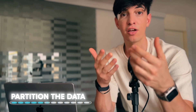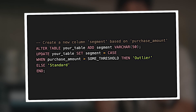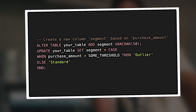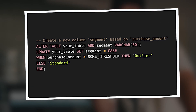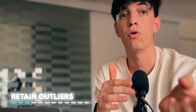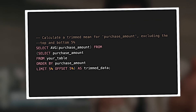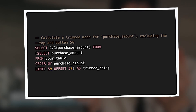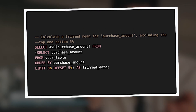Another way is to partition the data — segregate standard entries from outliers. Customers with expenditures considerably above average might present good marketing opportunities. You can create a new column 'segment' based on purchase amount: ALTER TABLE your_table ADD segment VARCHAR(50); UPDATE your_table SET segment = CASE WHEN purchase_amount > [threshold] THEN 'outlier' ELSE 'standard' END. Or you can retain the outliers but adapt your analysis technique, using weighted and trimmed means to minimize outlier influence. In SQL, to calculate a trimmed mean for purchase amount excluding the top and bottom 5%, use a subquery: SELECT purchase_amount FROM your_table ORDER BY purchase_amount, then LIMIT with a 5% offset as trim_data.